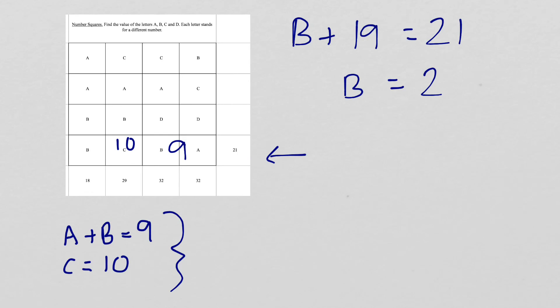Now that we know two numbers, we can just simply find the other remaining ones. So if b is 2, then a has to equal 7. And that means that d has to equal, we'll find a column with d in it, which will be this one here. So I know that c is 10, a is 7, b is 2.